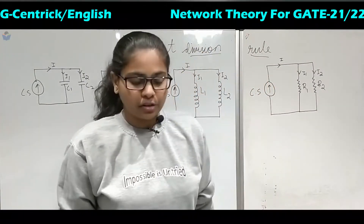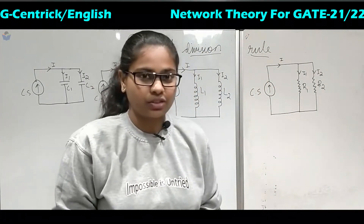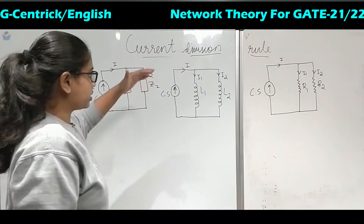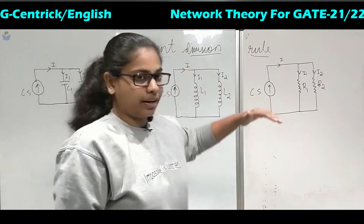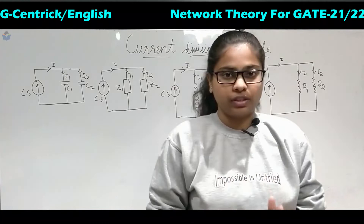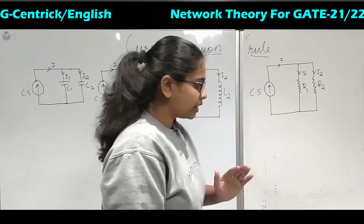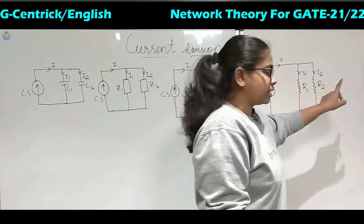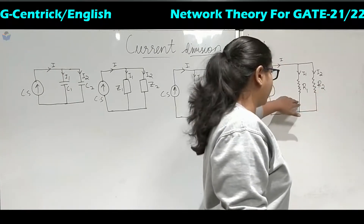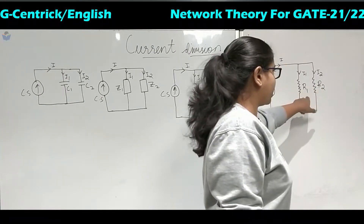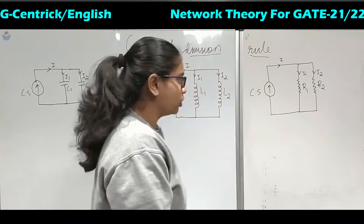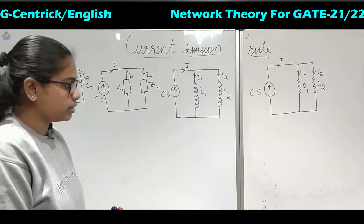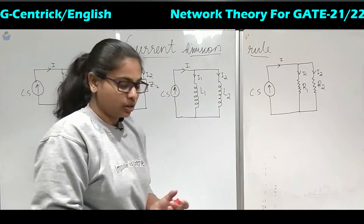Hello friends, welcome to G-Centered. In this lecture we will see what we mean by current division rule, and how this current gets divided when only two branches of elements are given. This current division rule is applicable only for two resistors and they should be in different branches. If there are more than two branches then we cannot apply this current division rule.